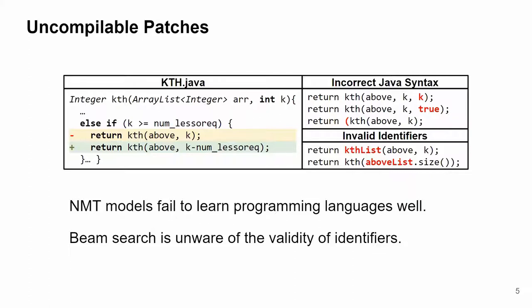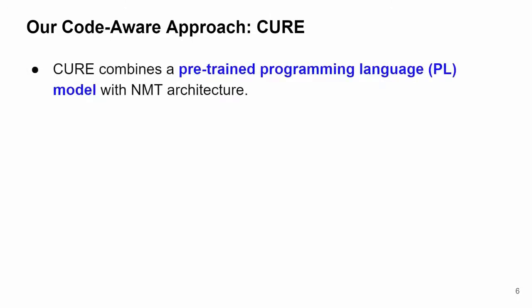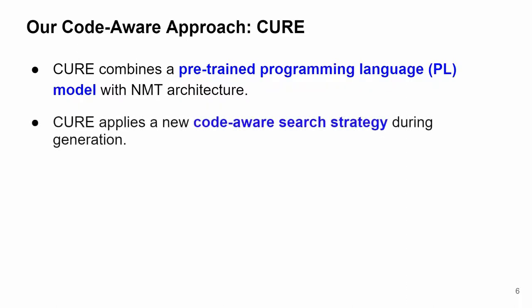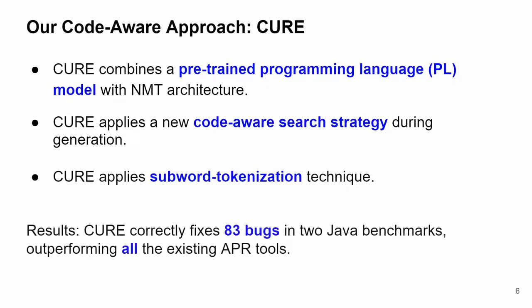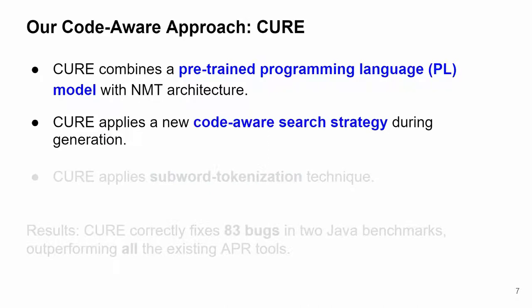In order to address these limitations, we propose CURE. To learn Java programming language, we propose a new APR architecture that combines a pre-trained programming language model with NMT architecture. And to generate valid identifiers, we design a new code-aware search strategy. Besides, CURE also applies sub-tokenization technique to construct a better search space that contains more correct patches. As a result, CURE correctly fixes 83 bugs in two Java benchmarks, outperforming all the existing APR tools. Given the time, I will only focus on the first and second points to show how the programming language model and the code-aware search strategy help CURE generate more compilable and correct patches. The details about all three points can be found in our paper.